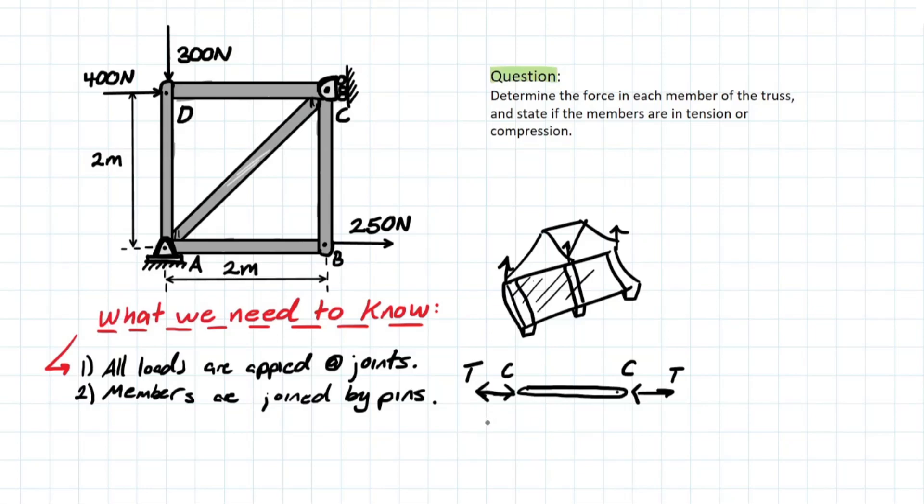So to solve by method of joints, what are we actually looking for? Why are we solving this truss? Well, just like any other equilibrium problem with rigid bodies, we're trying to find the force in each member to bring the structure to equilibrium. And it's very important to understand that, so that we can actually keep a safe structural framework.